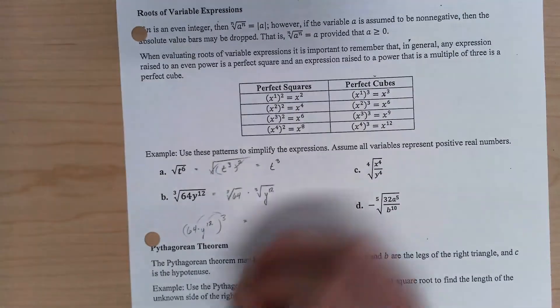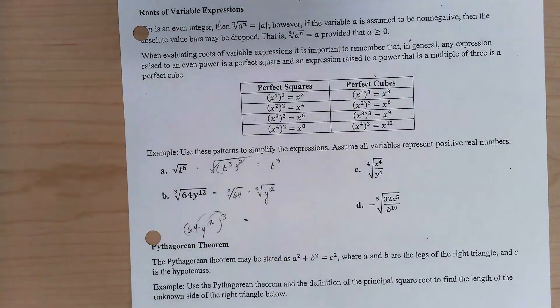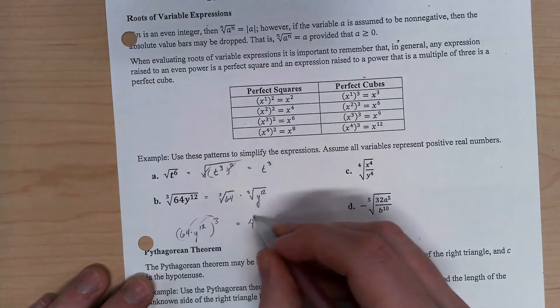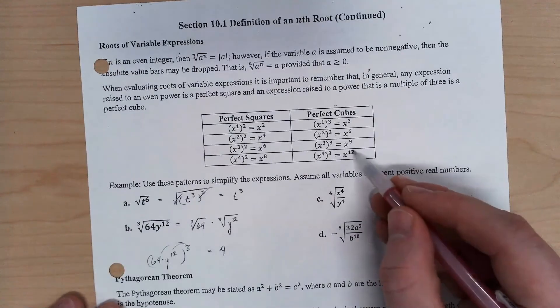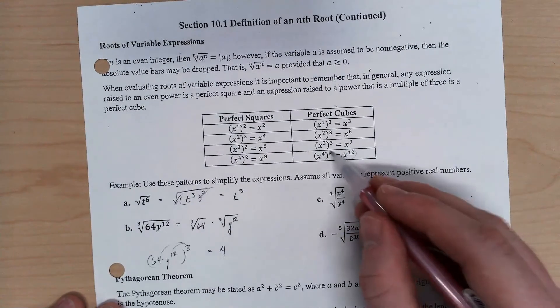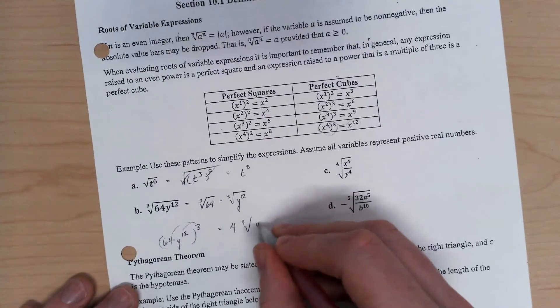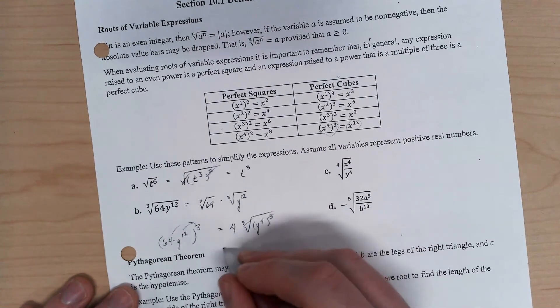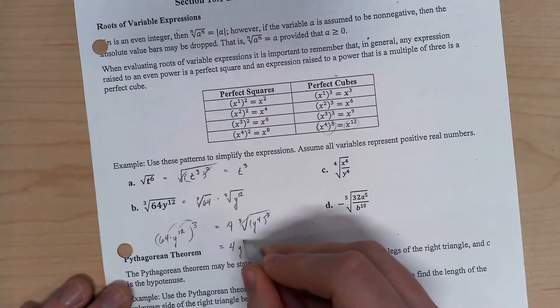Cube root of 64 is, what is that, 4? No. Yeah, it's 4. Our cube root of y to the 12th is going to be, well, y to the 12th is the same as y to the 4th cubed. And those are canceling. And we've got 4 times y to the 4th.